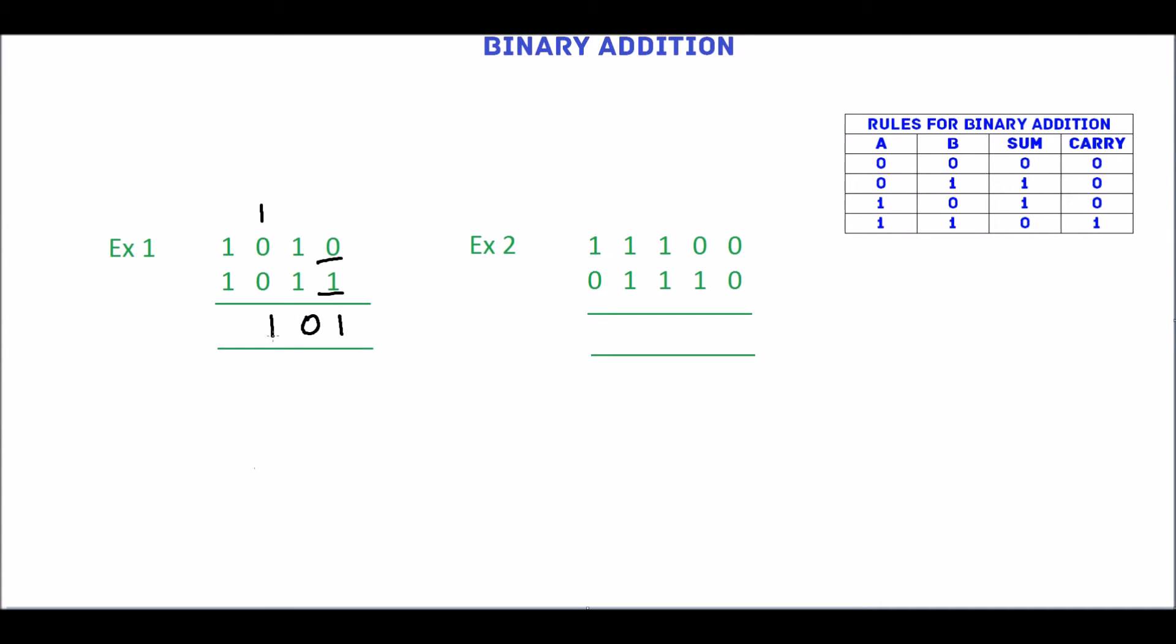Next add 1 and 1. Sum is 0. Carry is 1. Write carry as it is. 10101 is the sum of the above two binary numbers.